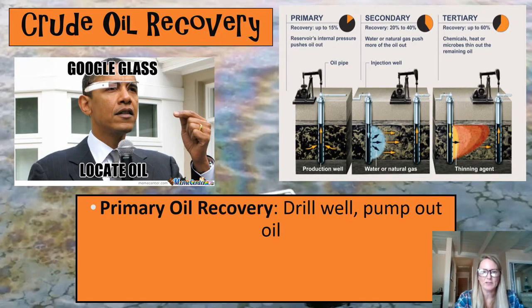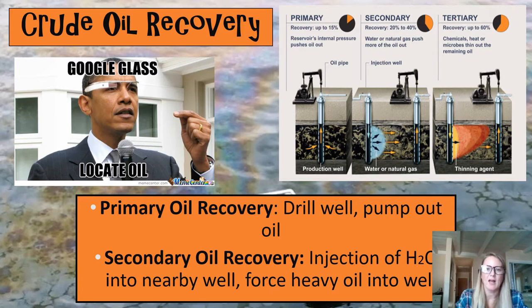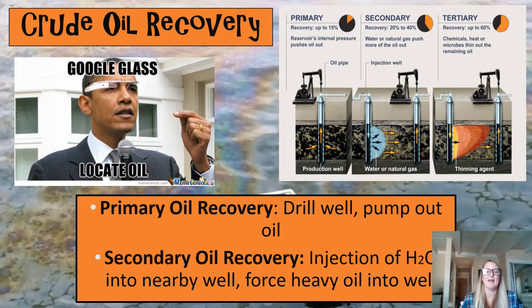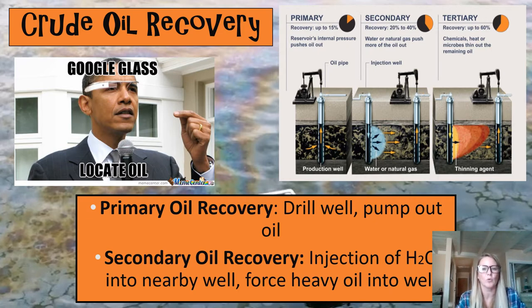There are two ways to recover oil from the ground. The first is called primary and the second is called secondary. Primary recovery is probably what you've seen in the movies — oil drillers drill a hole down into the pool of oil and then pump it up until there's none left. In secondary oil recovery, they sometimes insert air or water into the well to create pressure to bring up the last remaining bits of oil in the reserve.